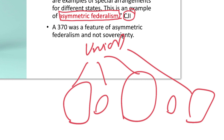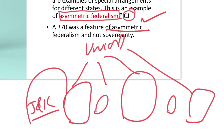Asymmetric federalism means different states have different kinds of powers and special arrangements with the Union. States in the Indian Union are not equal — Indian federalism does not give equality to states, so it is called asymmetric federalism. The CJI says that Jammu and Kashmir is also just one of the states like any other, meaning in effect Jammu and Kashmir did not have any special status.